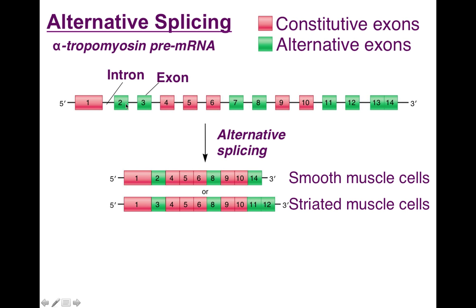This is the final messenger RNA that exists in smooth muscle cells. It has exons 1, 4, 5, 6, 9, and 10 — all alpha-tropomyosin will have those. But it has exon 2 and skipped over exon 3. It has exon 8 but not 7, and it has exon 14 but not 11, 12, and 13.